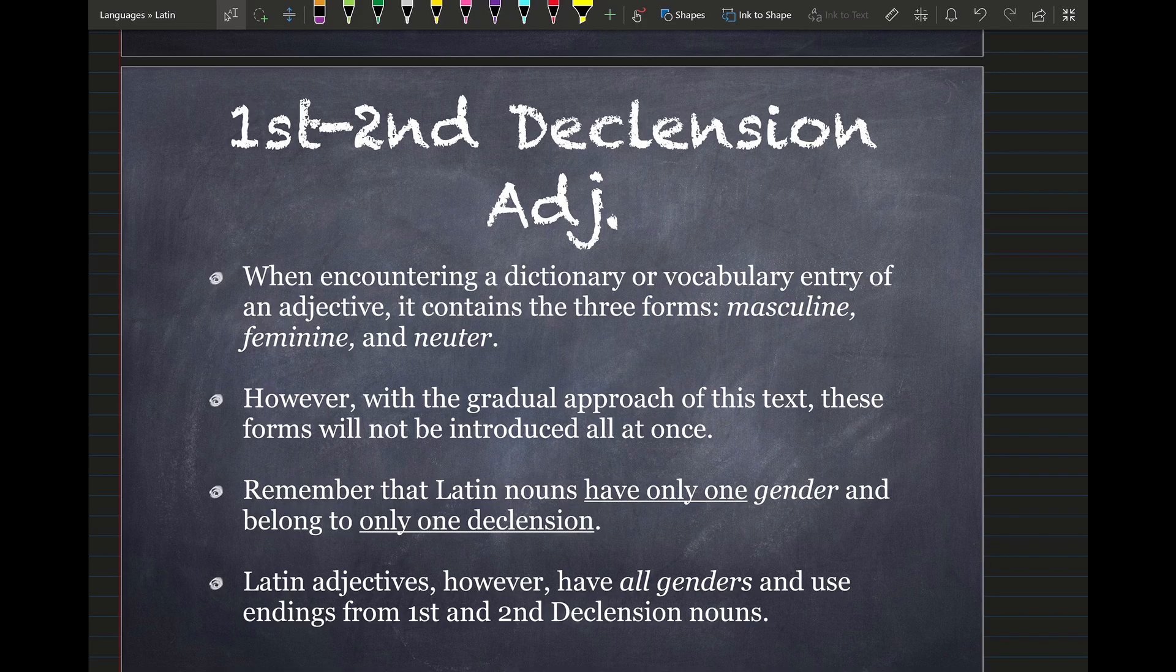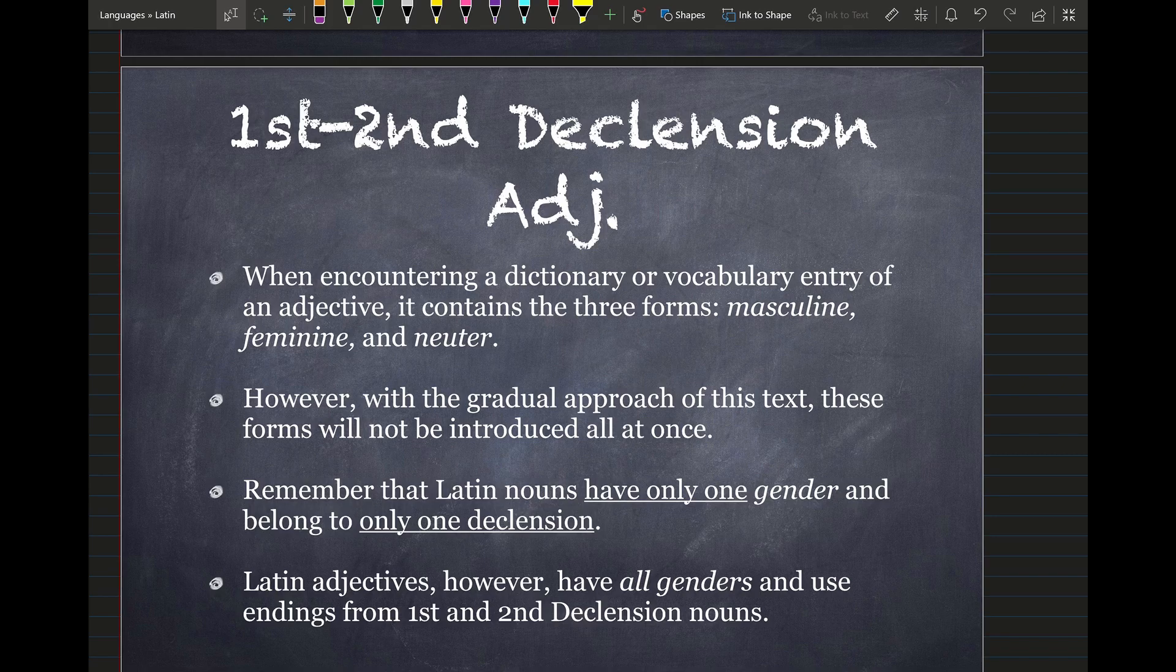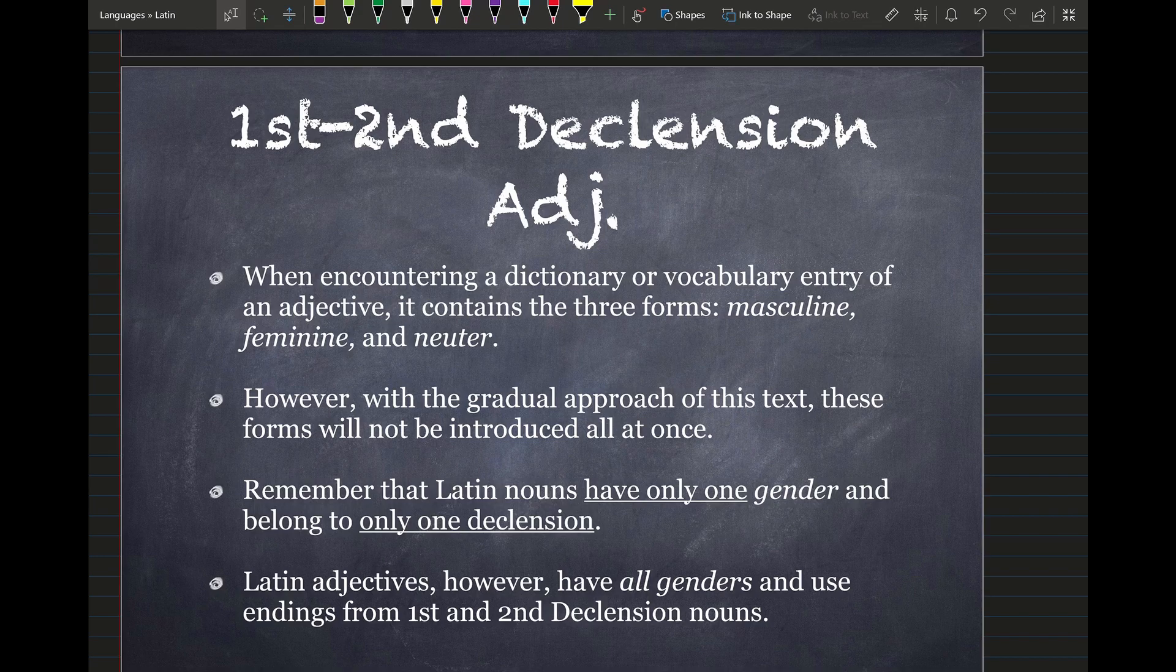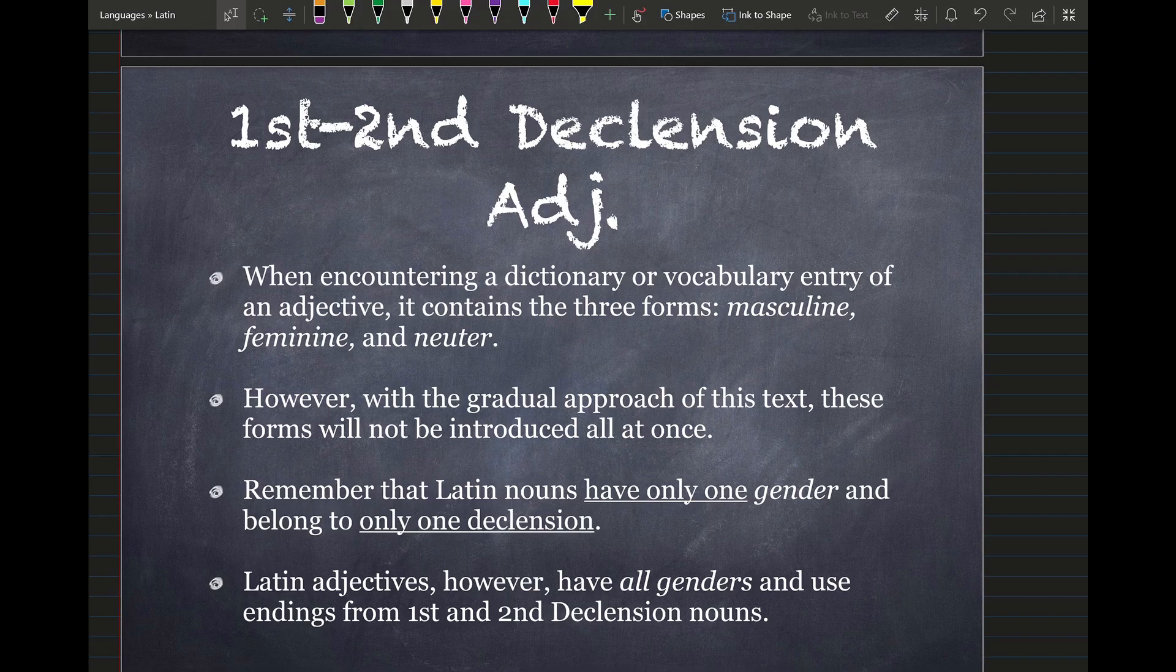Remember that the Latin nouns have only one gender and belong to only one declension group. So that's the noun. The adjective, however, has all genders and uses the endings from the first and second declension nouns. And we're going to see that in this chapter. So it's very important to pay attention to your adjectives. And usually, in the word order of Latin sentences, the adjective comes after the noun it modifies. That's usually. It's not all the time, but most of the time.